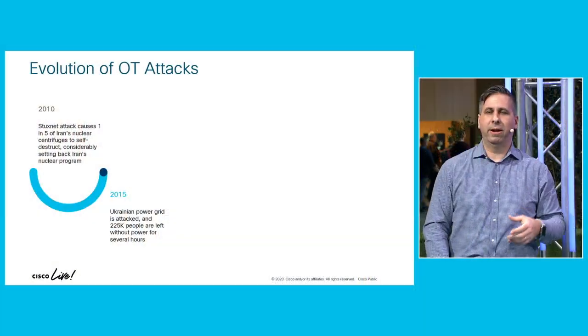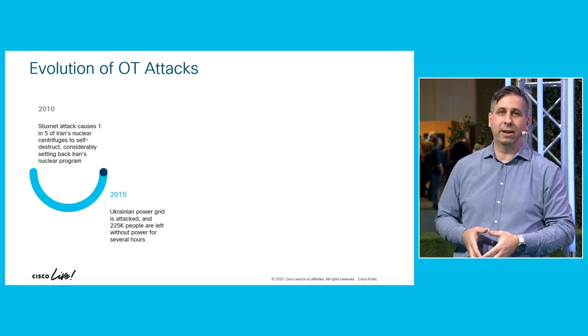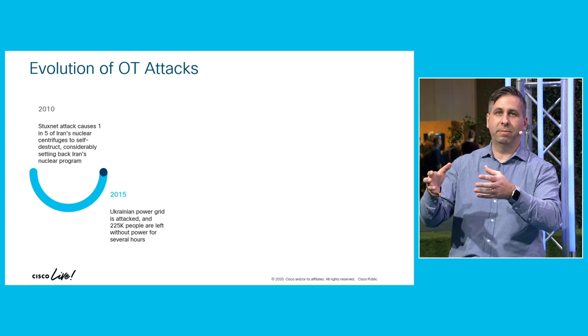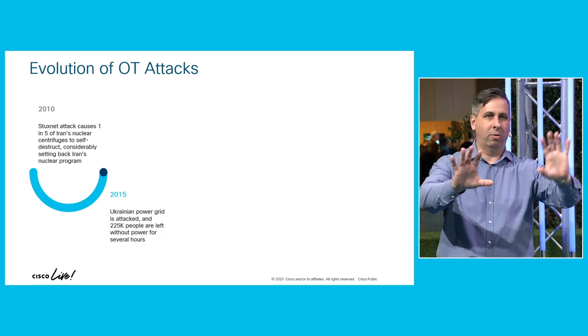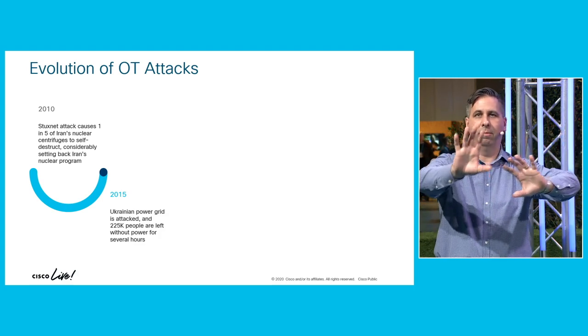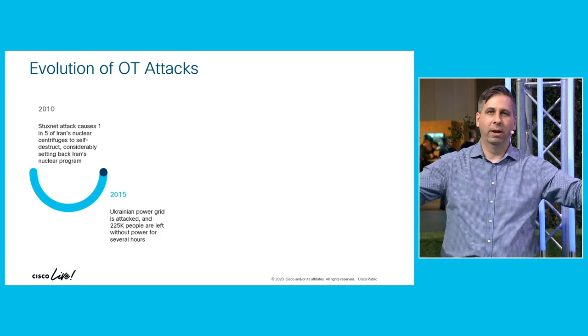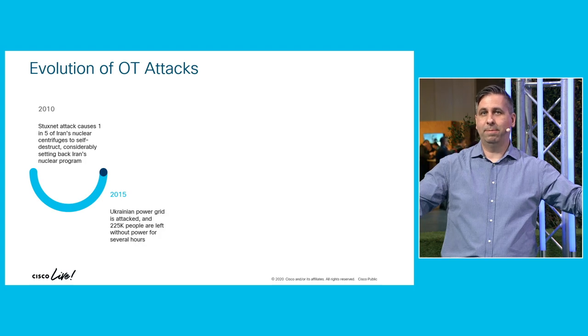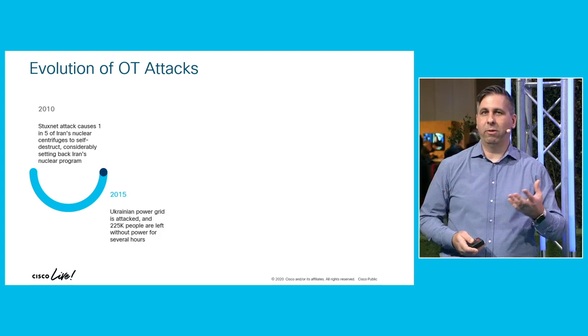One in five centrifuges was damaged by the end of the attack — a digital attack with very real-world physical consequences. A few years later came another nation-state attack, the first successful attack against a utility company. They took control of the utility systems, and there are even videos of people in the control room with no control, watching helplessly as the attackers shut down power for over 200,000 people for up to six hours.